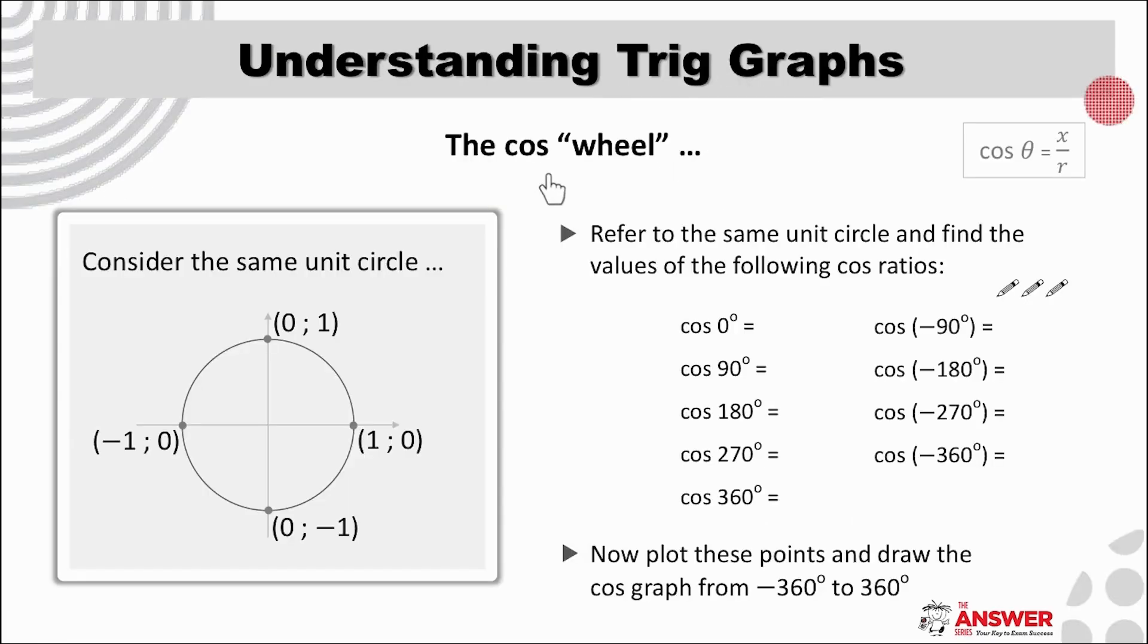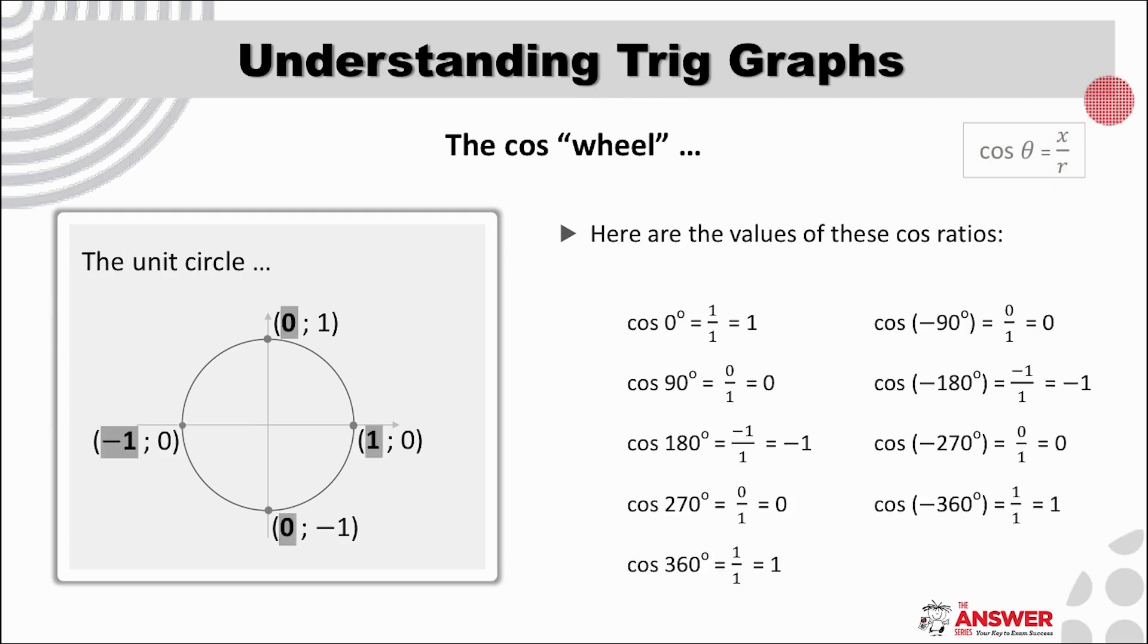Let's follow the same procedure now for the cos graph. So using the same unit circle, complete the ratios here. Remember cos is x over r. Pause the video to give yourself a chance to complete these ratios. As before, note the relationship in each case. For cos it is the ratio x over r. Maybe take a moment to check through to see that all your ratios are the same as here.